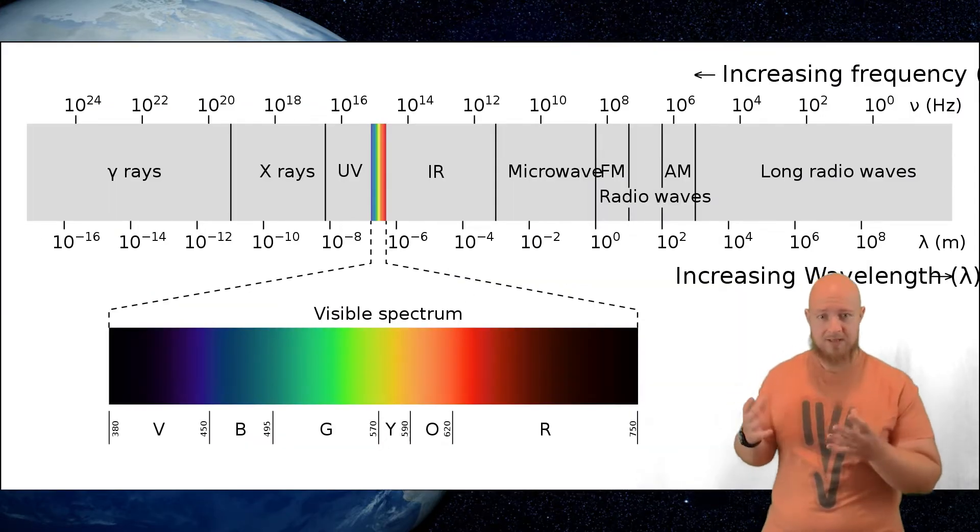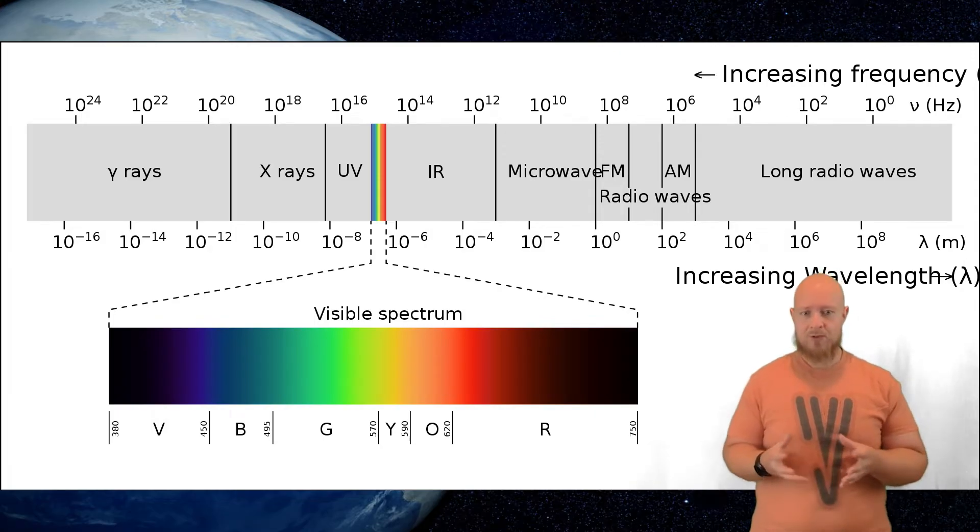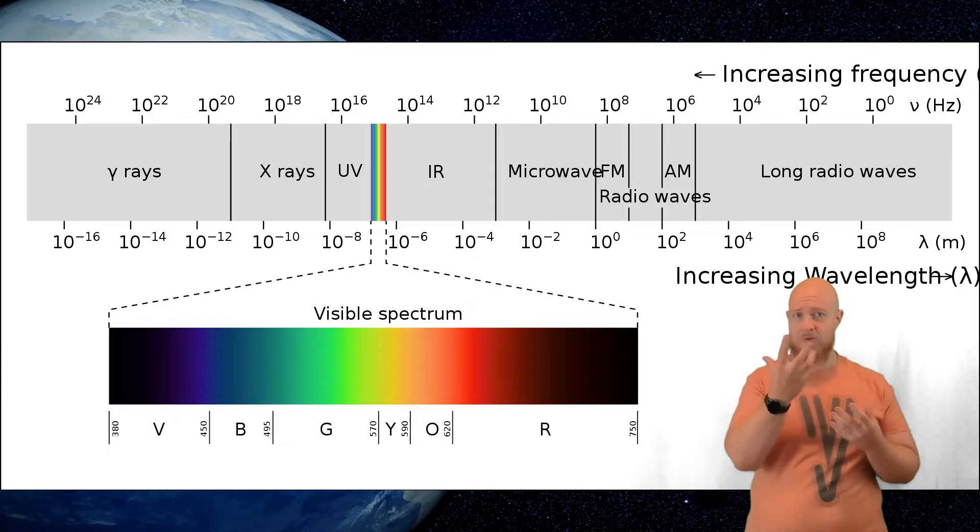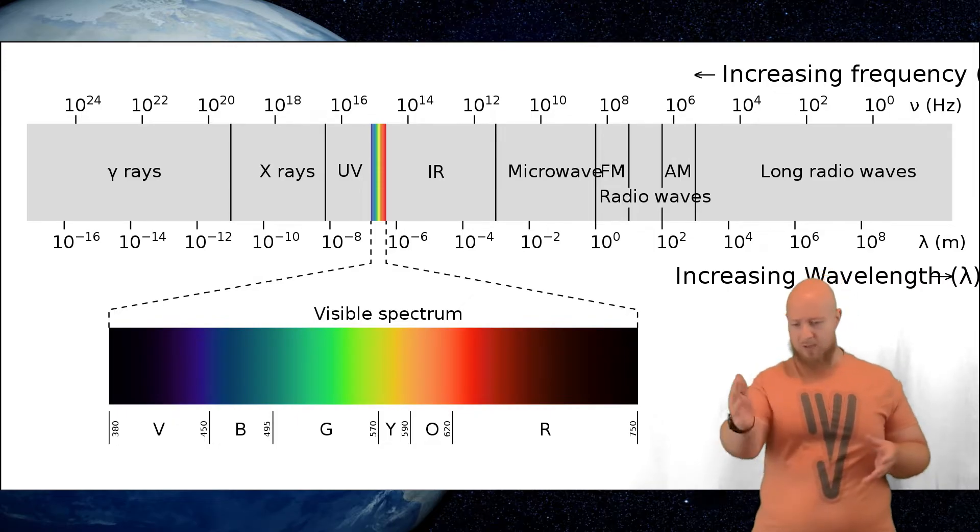We've actually seen this, right? The electromagnetic spectrum includes the visible spectrum or the wavelengths of light that we can observe with our eyes, but it also includes all the other wavelengths and frequencies of light, all the way including x-rays and UV and infrared, all of it.